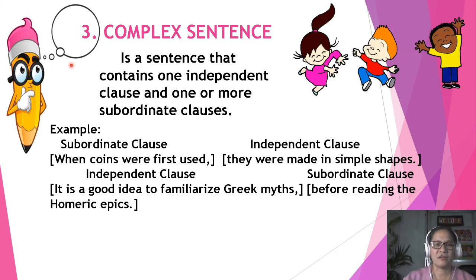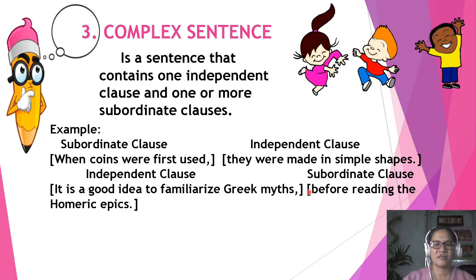Number 3: Complex Sentence. A sentence that contains one independent clause and one or more subordinate clauses. Example: 'When coins were first used, they were made in simple shapes.' — 'When coins were first used' is a subordinate clause; 'they were made in simple shapes' is the independent clause. 'It is a good idea to familiarize Greek myths before reading the Homeric epics' — the independent clause is 'it is a good idea to familiarize Greek myths,' and 'before reading the Homeric epics' is a subordinate clause.